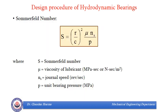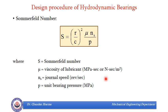The formula for the Sommerfeld number is S = (R/C)² × μNs/P. We have found S from tables or charts; R/C is known; Ns is the journal speed in RPS; and P is the bearing pressure already determined. So the only unknown in this equation is μ, the absolute viscosity in units of Pa·s or N·s/m². This formula gives us the required absolute viscosity of the oil.